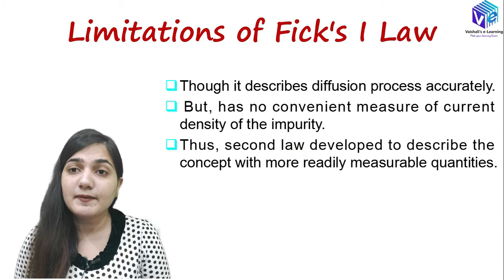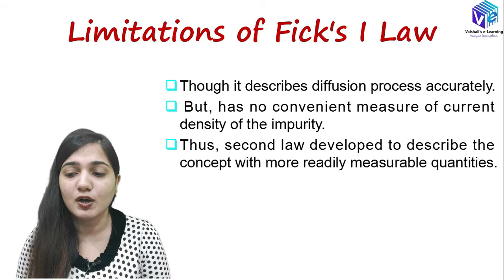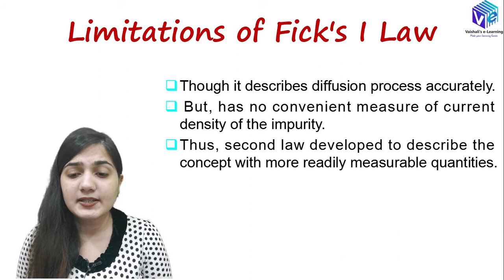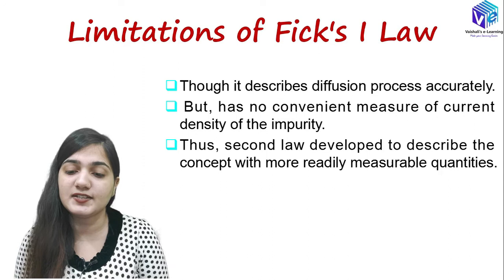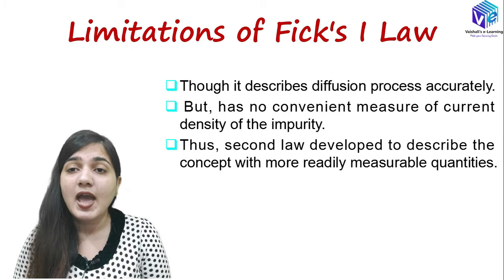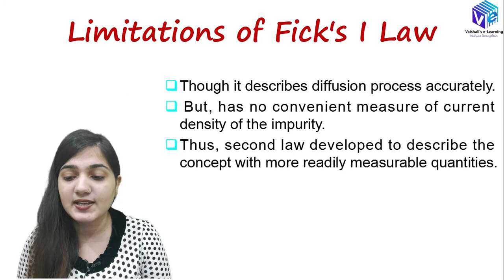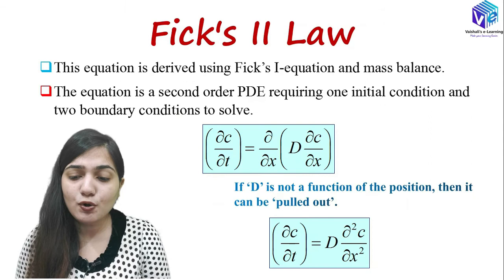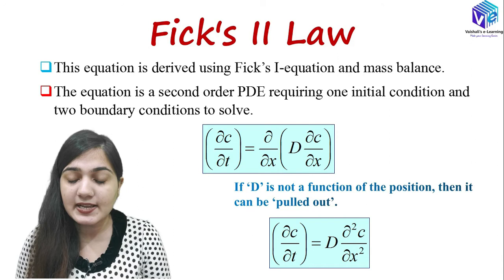Now coming to the limitations of Fick's first law. It describes the diffusion process and tells us the direction of mass flow and the diffusion constant, but there is no convenient measure of the current density of the impurity — I don't know how much impurity is moving as a current. So Fick's second law was developed to describe the concept with more readily measurable quantities, including current density. The second law is a better law than the first.